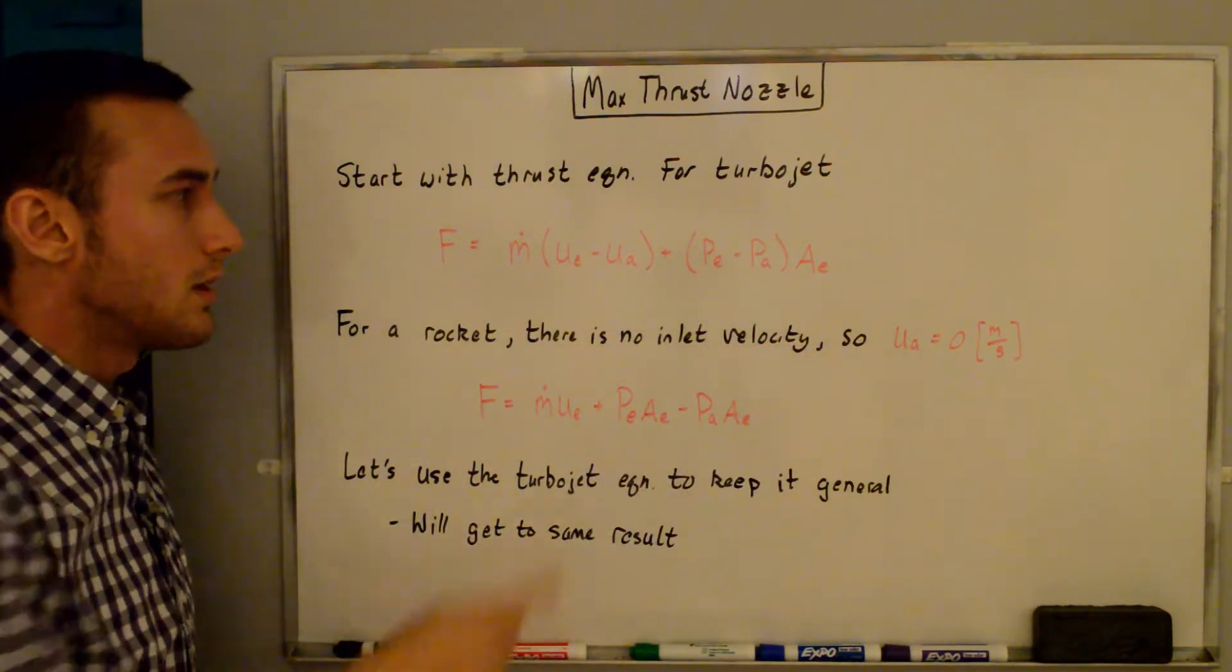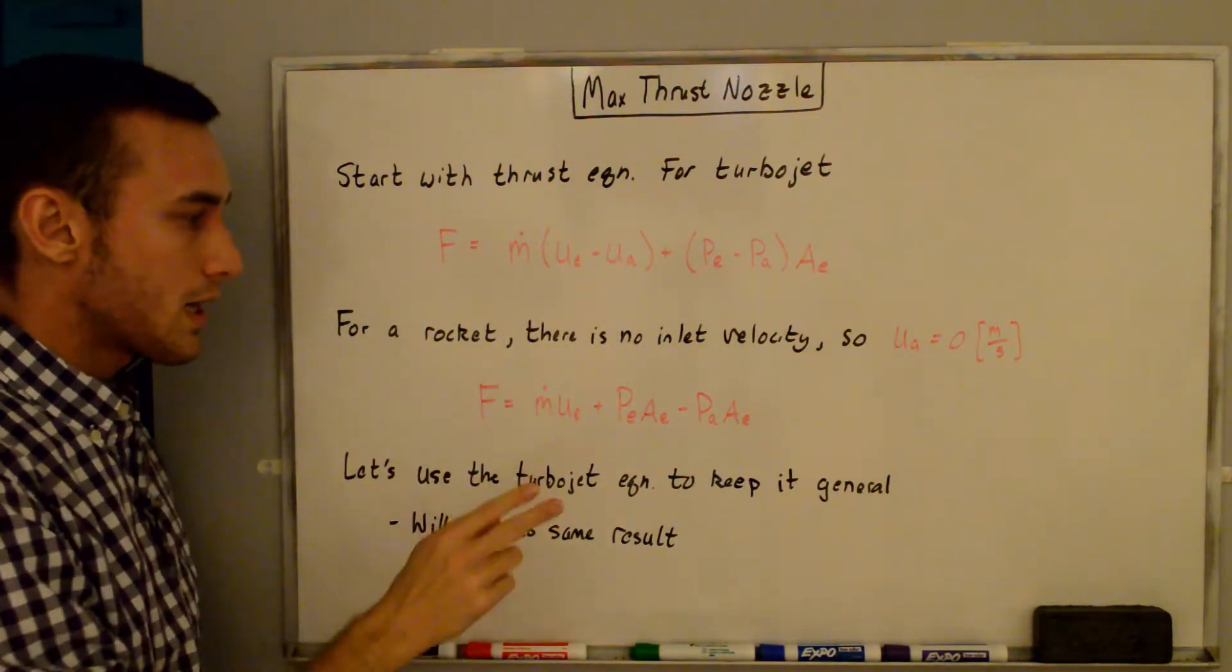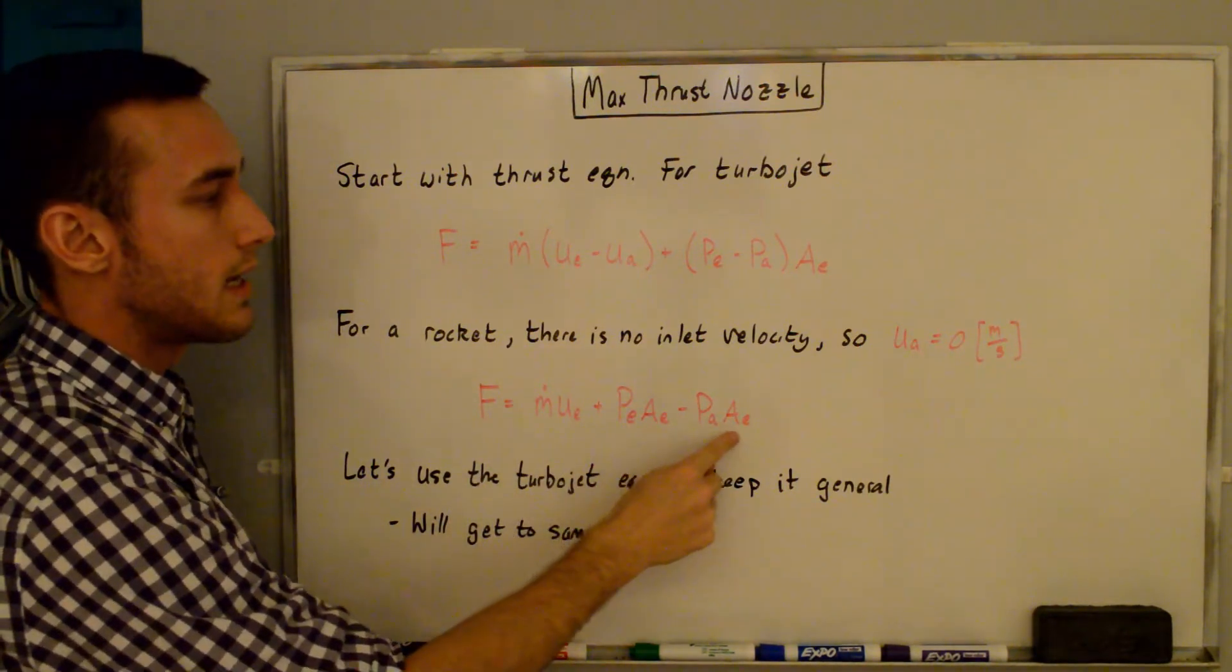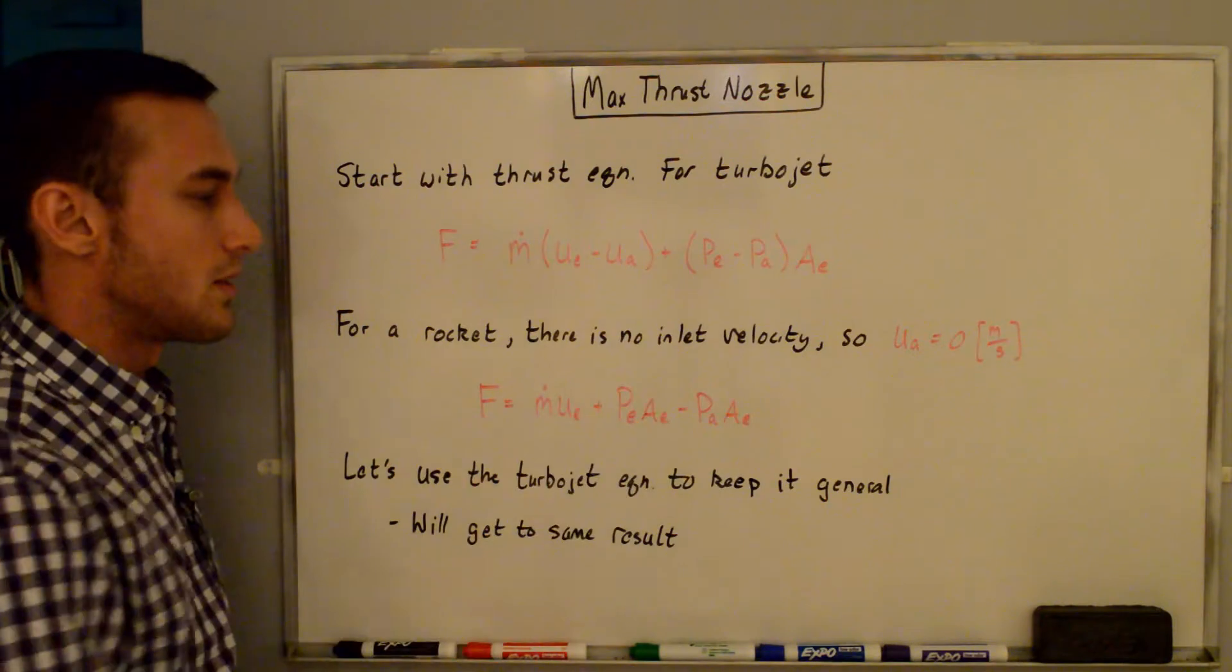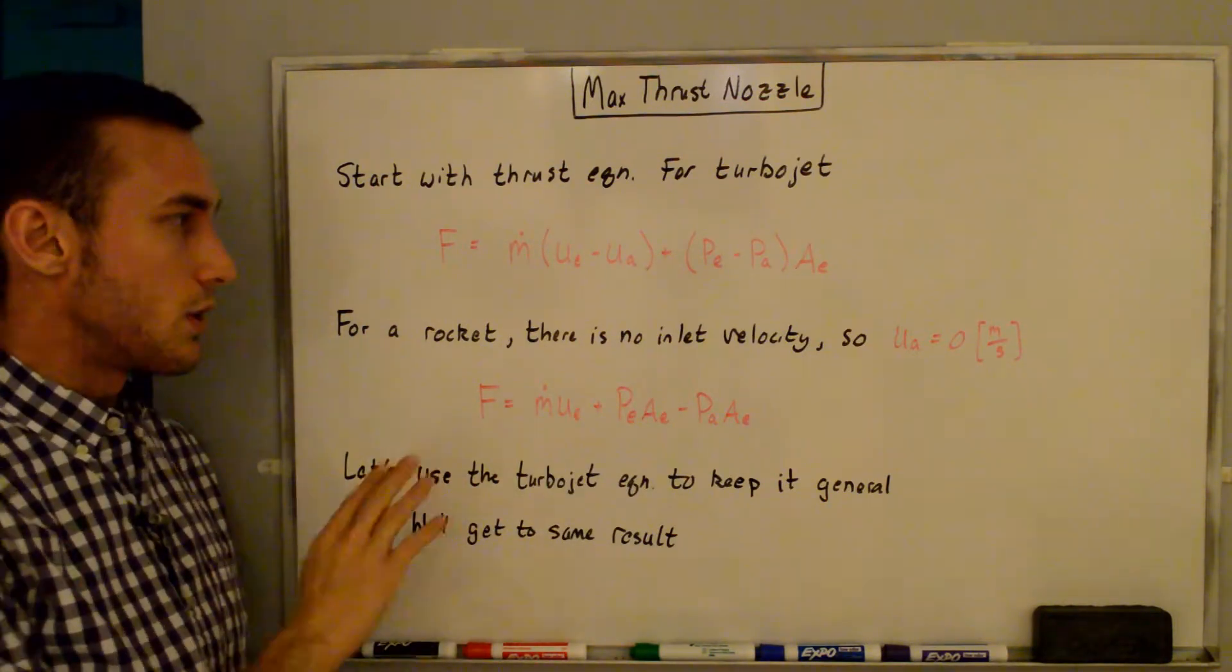Now for a rocket, there's no inlet velocity, so UA is equal to zero, and so just canceling that out, we get that the thrust for a rocket is ṁuE plus pEAE minus pAAE. I've just multiplied the exit area through. Let's use the turbojet equation though to keep it general, and we'll still get to the same solution.